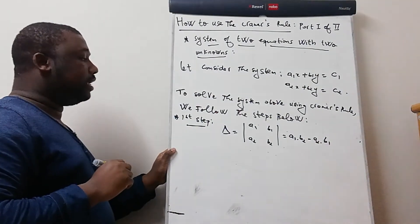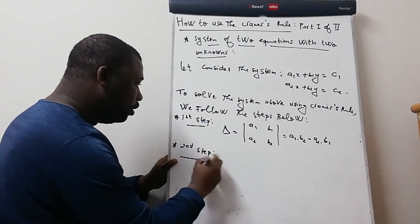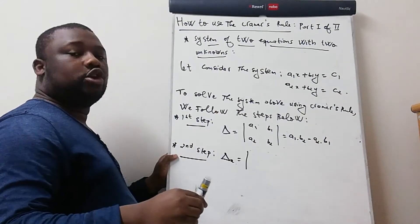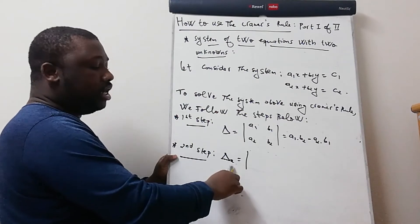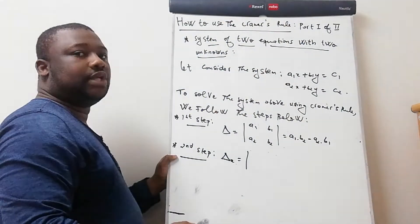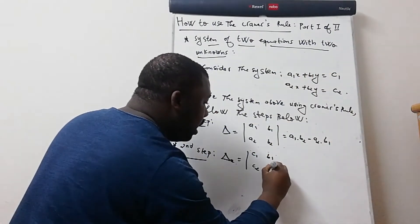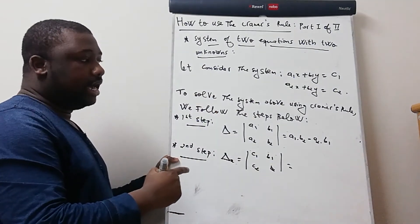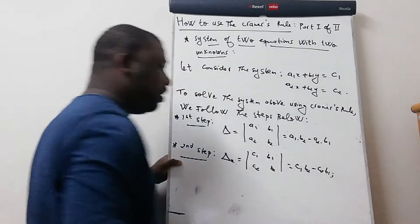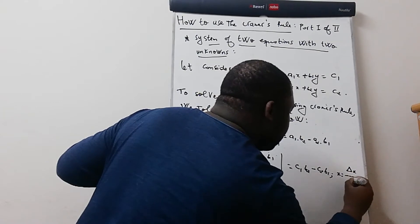Step two: we need to find Delta x. We still take the coefficients in front of the variables, but wherever x appears, instead of taking the numbers in front of x, we take the numbers on the right-hand side of the equations — so c1, c2 — then we continue with b1, b2. This gives us: Delta x = c1·b2 minus c2·b1. Then x equals Delta x over Delta.